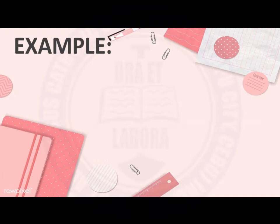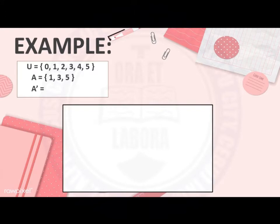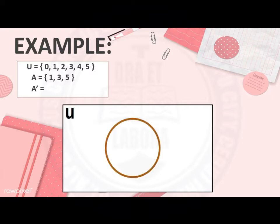Suppose we are given the universal set which has elements 0, 1, 2, 3, 4, and 5, and we are asked to find the complement of set A, or A complement. To find A complement, we need to illustrate the given sets using a Venn diagram. The first step is to draw the universal set, represented by a rectangle, and label it with capital letter U. Then, draw set A as a circle and label it. Next, write the elements of set A: we have 1, 3, and 5.